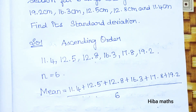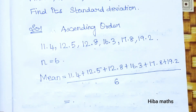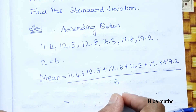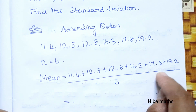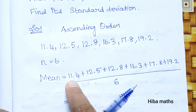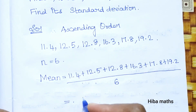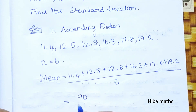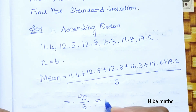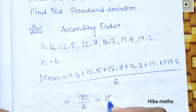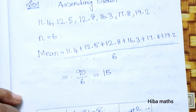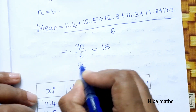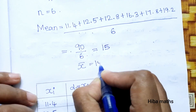First, the mean is calculated as the sum of all observations divided by the number of observations. The sum of all values is 90, divided by 6. So the mean x̄ = 15.